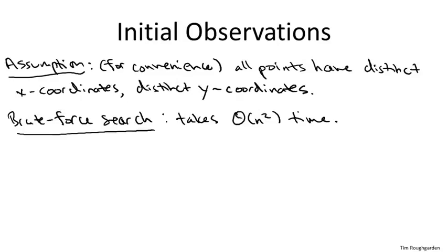You might have an initial instinct that because the problem asks about a quadratic number of different objects, perhaps we fundamentally need to do quadratic work. But recall back in counting inversions, using divide and conquer we were able to get an n log n algorithm, despite the fact that there might be as many as a quadratic number of inversions in an array. One of the keys to getting an n log n time algorithm for counting inversions was to leverage a sorting subroutine — we piggybacked on merge sort. So the question is whether sorting can again be useful to beat the quadratic barrier.